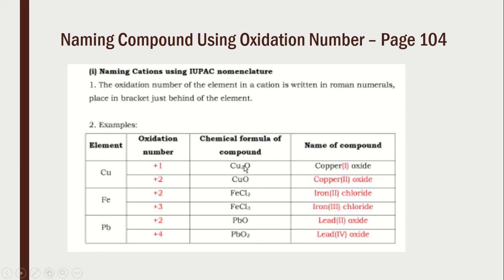When we cross Cu²⁺ with O²⁻, we get CuO — so the name must include Roman numeral II: copper(II) oxide. When writing copper sulfate or copper nitrate, we must put Roman II. For Cu₂O, that is copper(I) oxide because crossing Cu⁺ with O²⁻ gives Cu₂O.